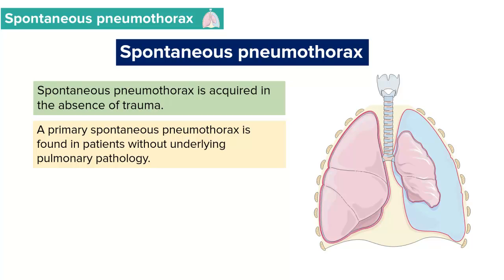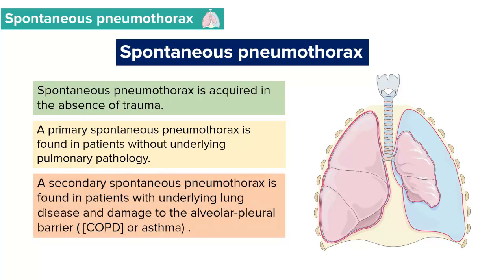Primary spontaneous pneumothorax occurs in patients who have no underlying lung pathology. Secondary spontaneous pneumothorax, on the other hand, is found in patients who have an underlying lung disease or a damaged alveolar pleural barrier. The most common underlying lung conditions in patients with spontaneous pneumothorax are chronic obstructive pulmonary disease or asthma.